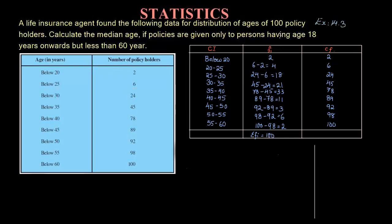The question also specifies it is 100, so you can pause the video, add all the frequencies, and cross-verify. If you get 100 and the cumulative frequency is also 100, it is correct — as discussed in the previous video when we were finding the median. Now let us find the median class.